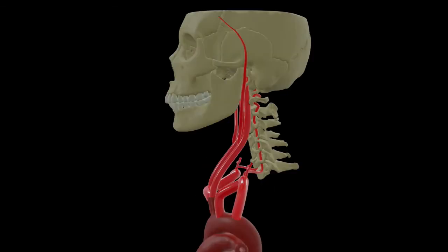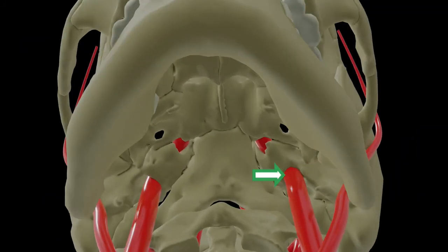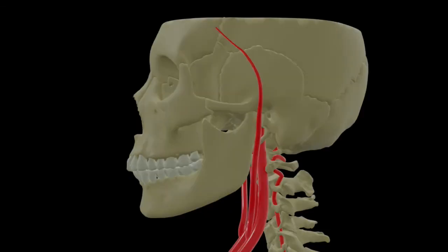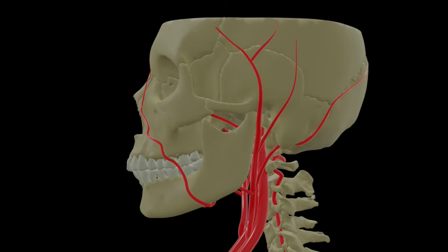Now our common carotid artery soon divides into the external and internal carotid artery. Of these, the internal carotid artery right away enters the skull through the carotid canal - we will follow its course inside the skull along with the vertebral artery later. Now we'll come back to the other branch of the common carotid, that is the external carotid artery, which is the major artery supplying most of the structures in head and neck. This external carotid artery gives out eight branches - I have shown only a few branches here in order to keep the animation simple.